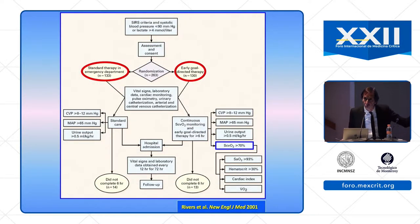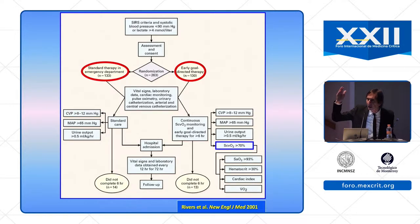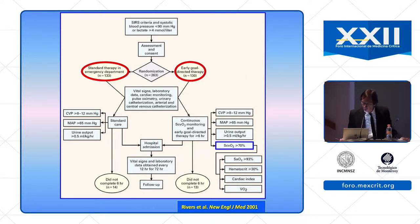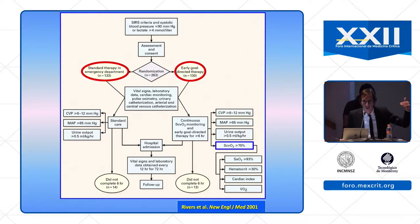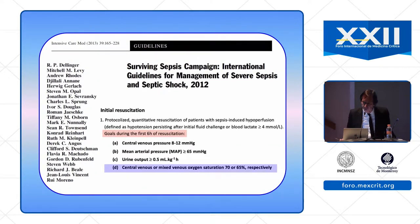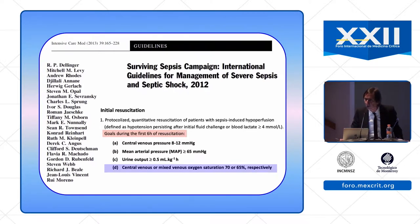ScvO2 was proposed as an endpoint in the Early Goal-Directed Therapy protocol by Rivers and co-workers. ScvO2 was the main endpoint in the early phase of resuscitation, and the early goal-directed therapy group had a better outcome in terms of mortality and morbidity than the control group. This is why for years the Surviving Sepsis Campaign recommended using ScvO2 for guiding resuscitation in the early phase of severe sepsis and septic shock.